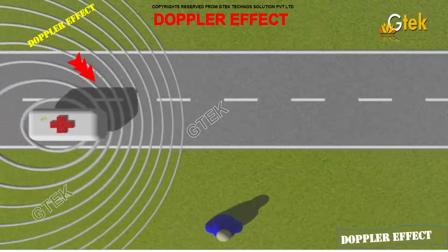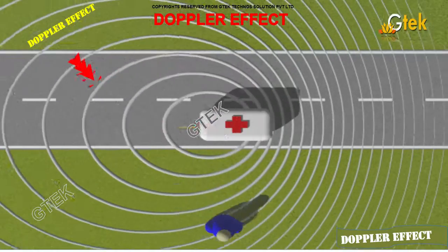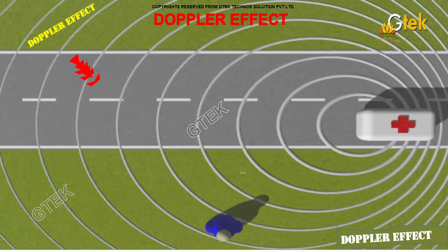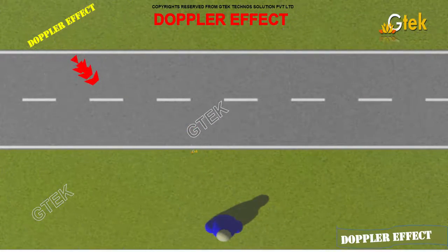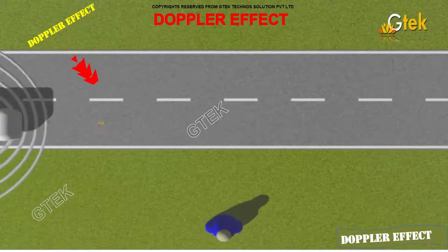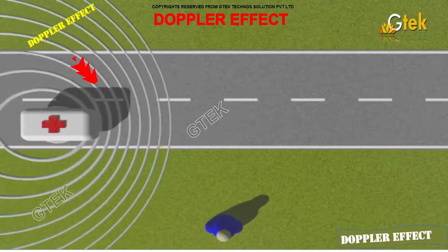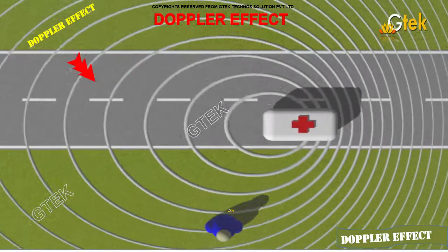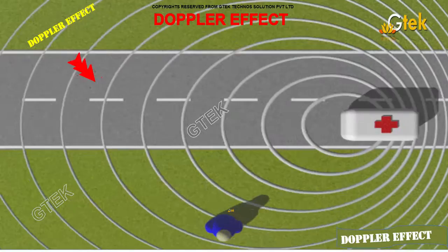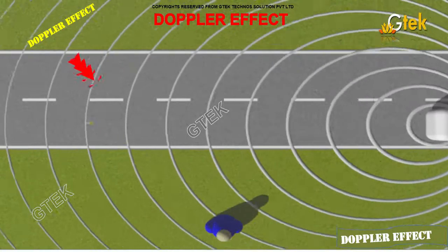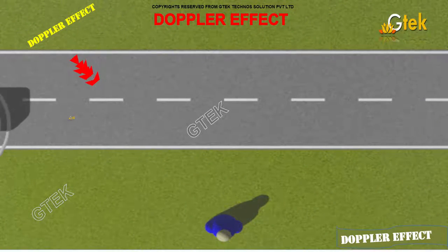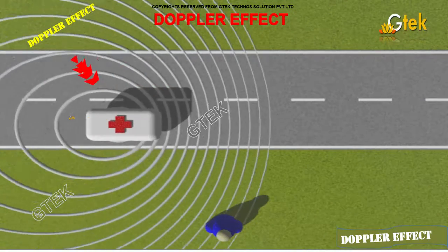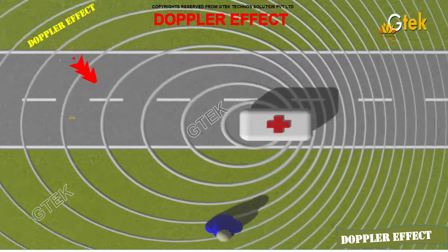What is Doppler effect? You are able to see the wavelength of the radiation or rays will differ based on the relative distance between the object. So this is called as Doppler effect. This is called shifting of light — red shift and blue shift.